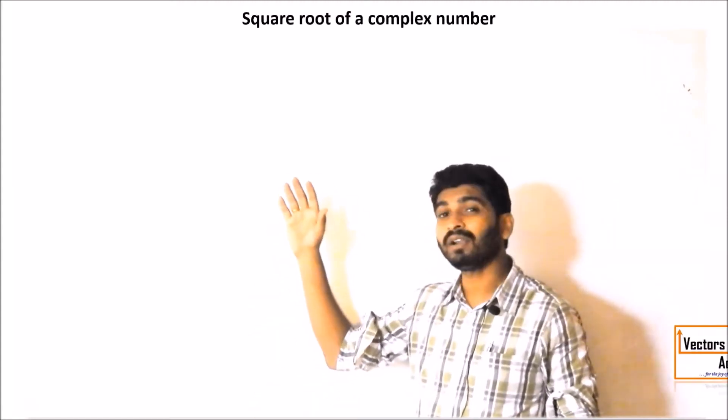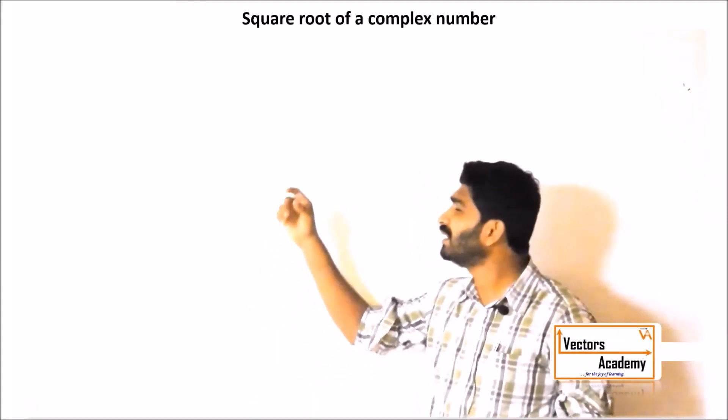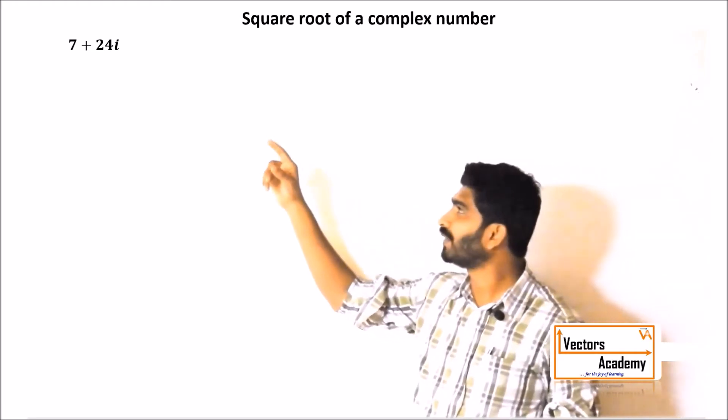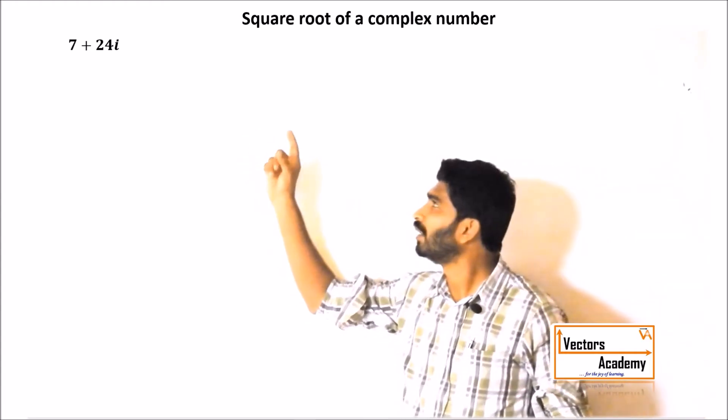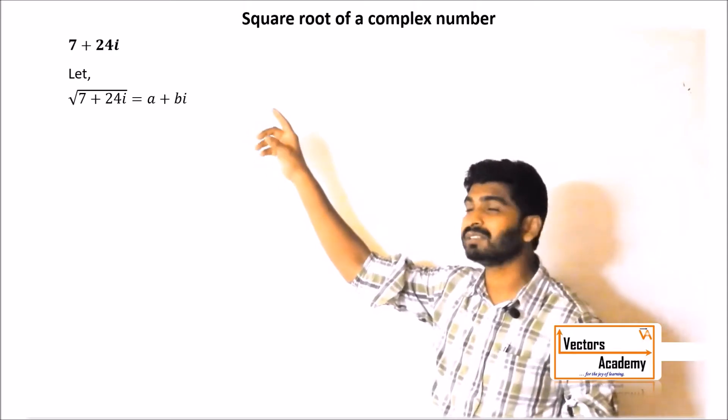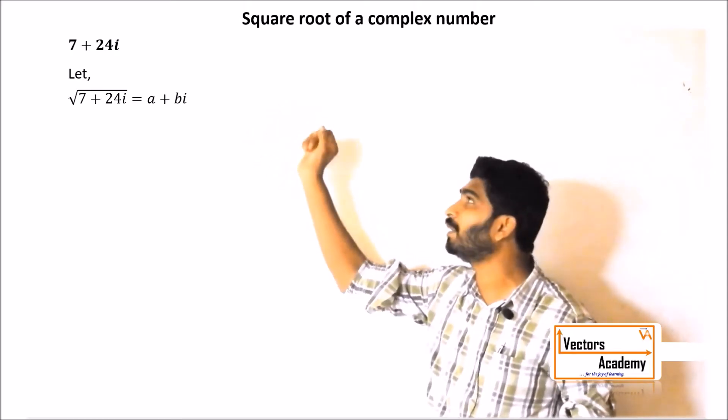Let us have a look at how to find a square root of a complex number. Consider a complex number 7 plus 24i. Let the square root of this number be equal to another complex number, a plus ib.